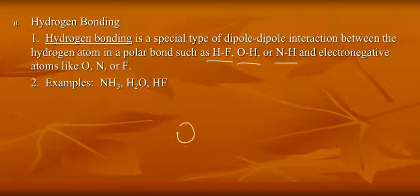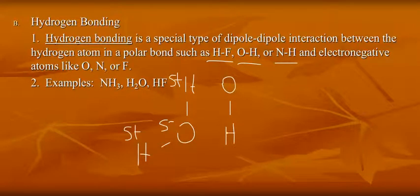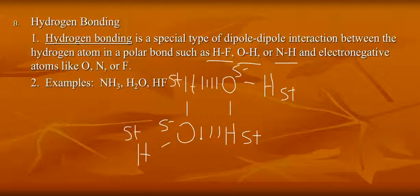For example, water. Because of differences in electronegativity, oxygen is slightly negative, hydrogen is slightly positive. So if I have another molecule of water, there will be an attraction between the oxygen of one molecule and the hydrogen of another molecule. These are very strong intermolecular attractions.